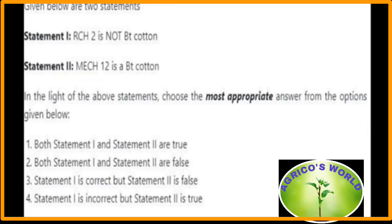Given below are two statements. Statement 1: RCH 2 is not a BT cotton — false, RCH 2 is a BT cotton, so statement 1 is false. Statement 2: MCU 12 is a BT cotton — yes, MCU 12 is a BT cotton, so statement 2 is correct. The most appropriate answer is: statement 1 is incorrect but statement 2 is true — that is option four.